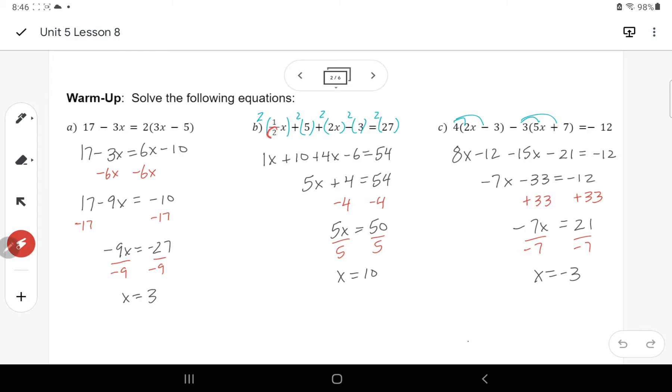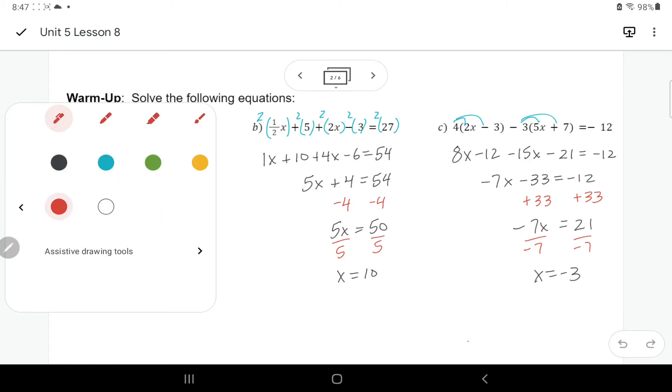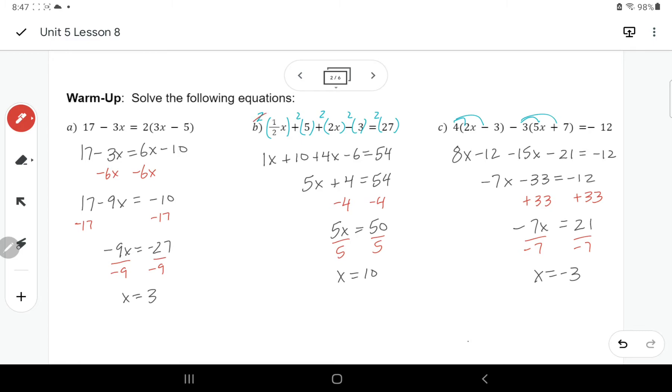So the first thing I would do here is to get rid of this 2 on the bottom in one of my terms. I'm going to multiply every single term, including the opposite side, both sides of the equation, by the lowest common denominator. So here, that 2 and that 2 are going to cancel out. So I'm just left with 1x, no more fractions, great news.